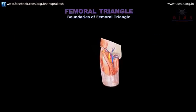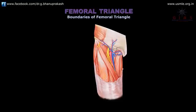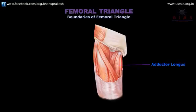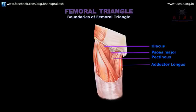We must now see the floor of the triangle. The floor of the femoral triangle is formed medially by the adductor longus and pectineus, and laterally by the iliacus and psoas major muscles. These four muscles form the floor of the femoral triangle.